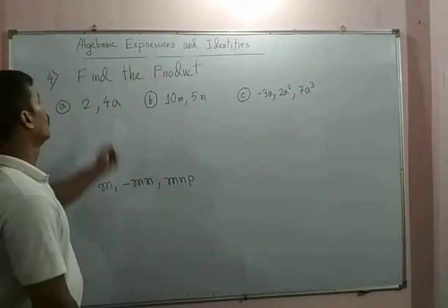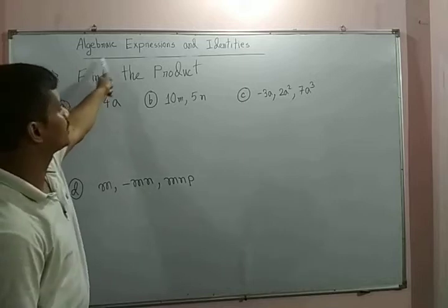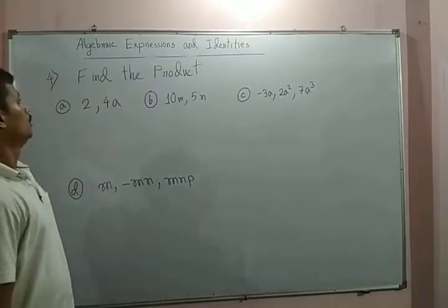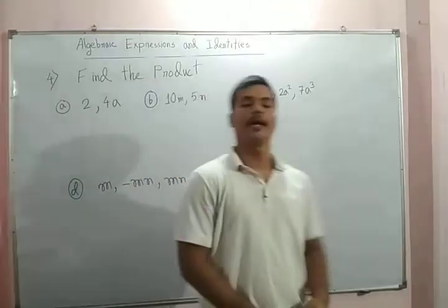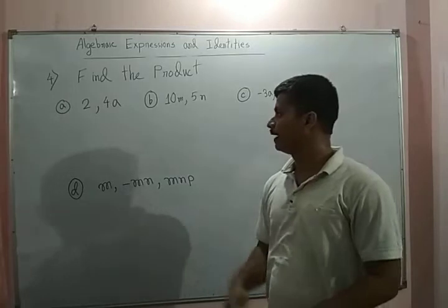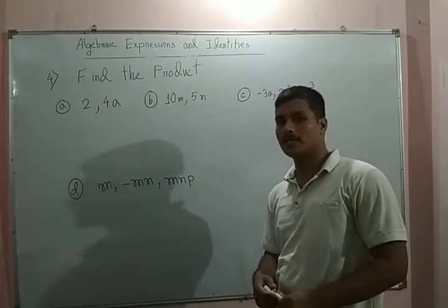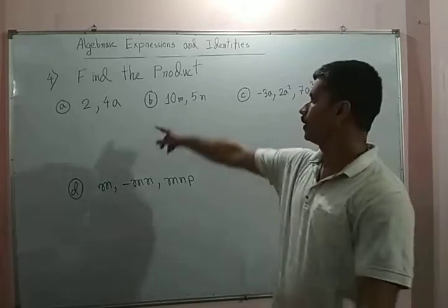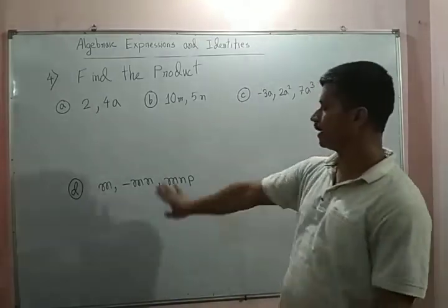Hello students, we are discussing the chapter algebraic expressions and identities. Now we will learn how to find a product of monomials. Monomials means those expressions carry one term. Here we have four equations: a, b, c, and d.